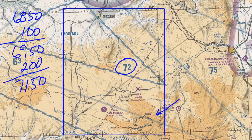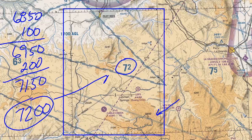So now we're left with 7,150 feet. Rounding up to the nearest 100 feet, we end up with 7,200 feet, which matches the MEF value for this quadrant.